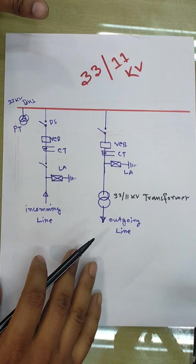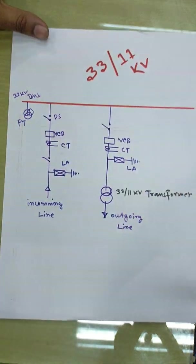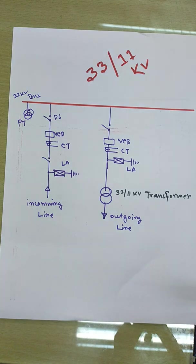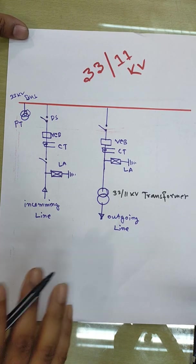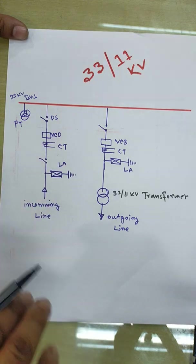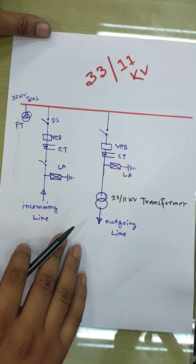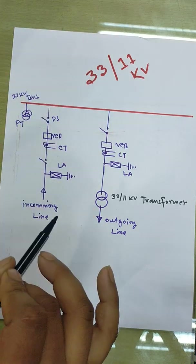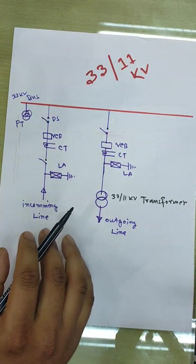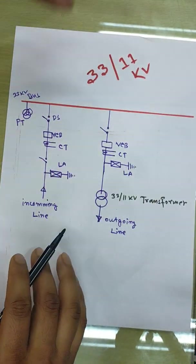Here, when 33kV comes in, there is a bus. If you have a bus, you can see the power line. If you have a place where the power comes, you can move the power. If you have an incoming line, you can see the power.